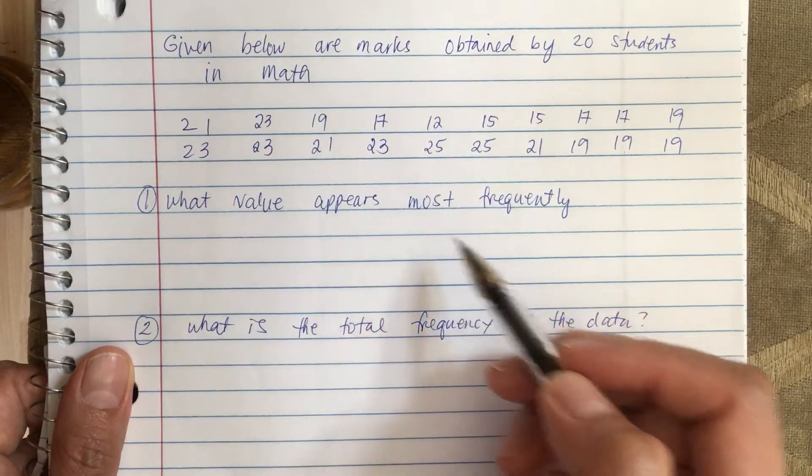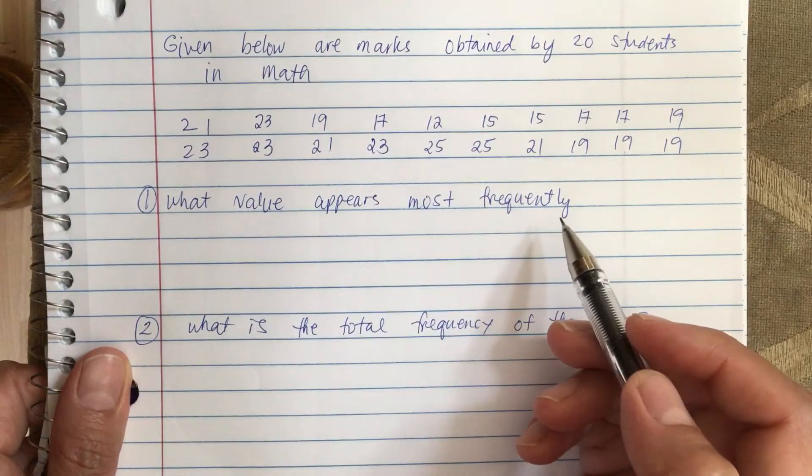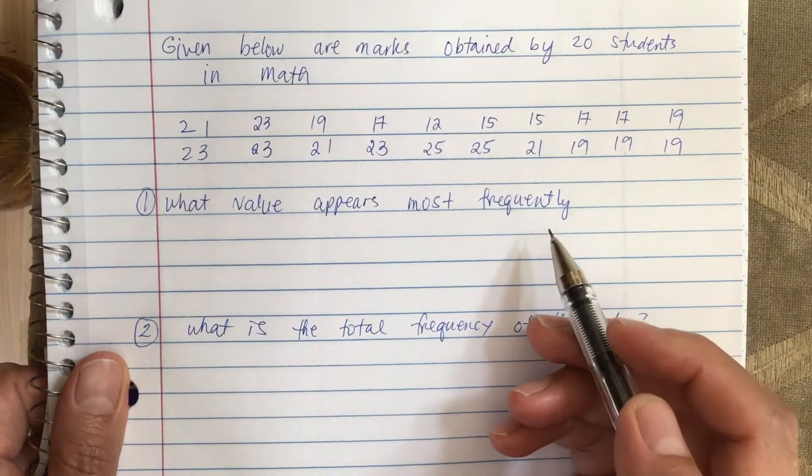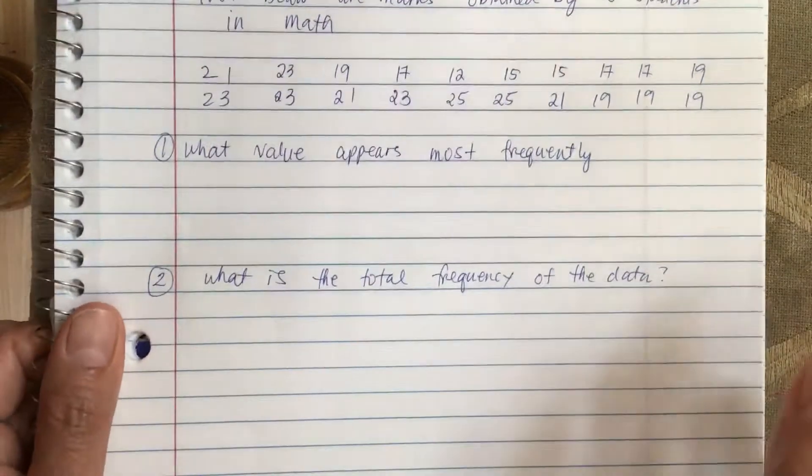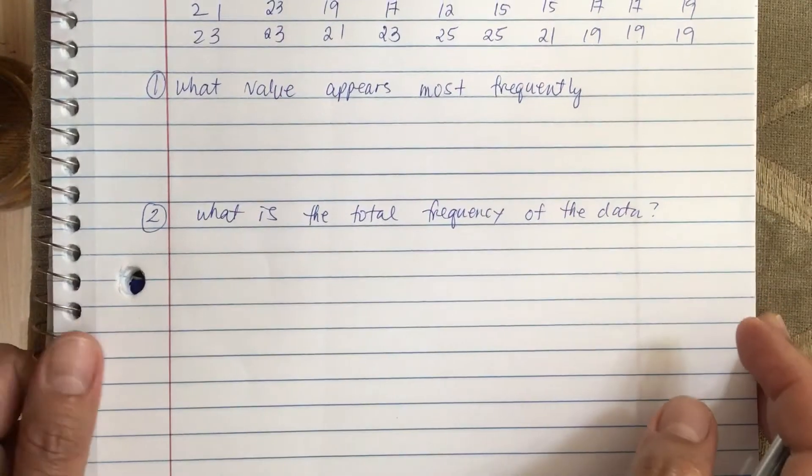What value appears most frequently? So let's arrange the numbers and make a frequency table.